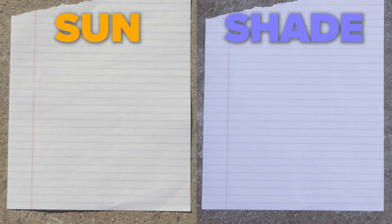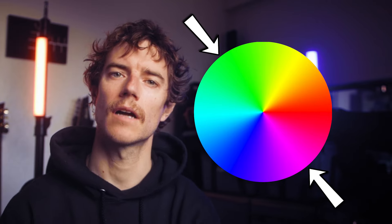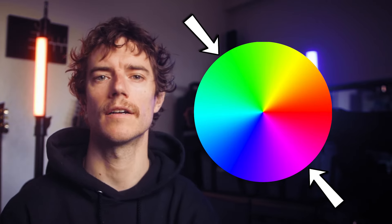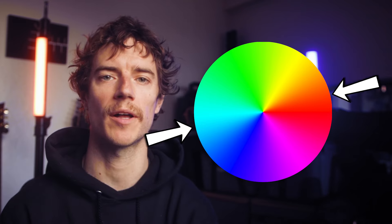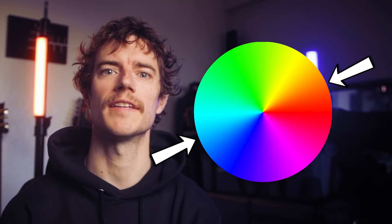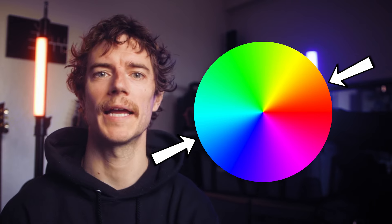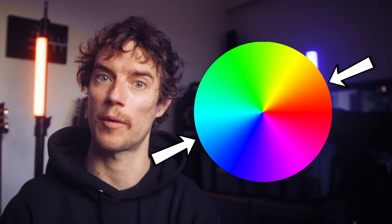Notice the difference in the same piece of paper taken with the same camera temperature setting. One reason why mixing color temperatures in frame looks so pleasing is due to some basic color theory. Colors that are directly across from each other on the color wheel are known as complementary colors. Notice that blue and orange are across from each other on this wheel — it's this part of color theory that we're taking advantage of when we combine mixed color temperatures and white point settings on a camera to achieve the blue and orange look.